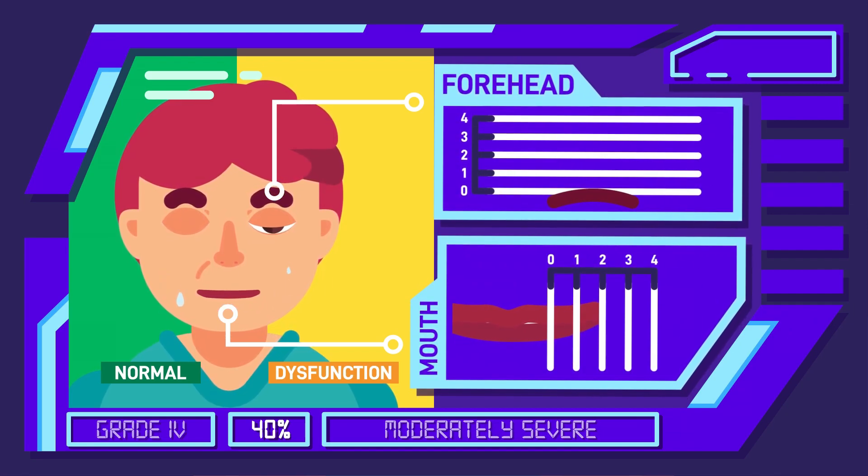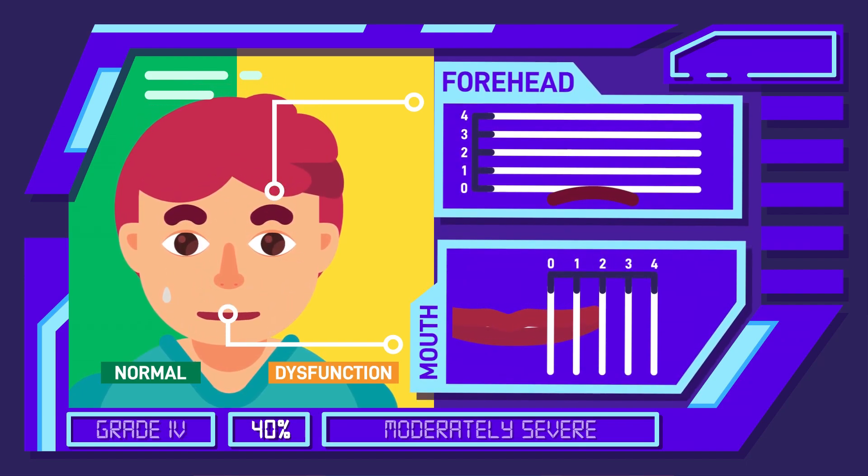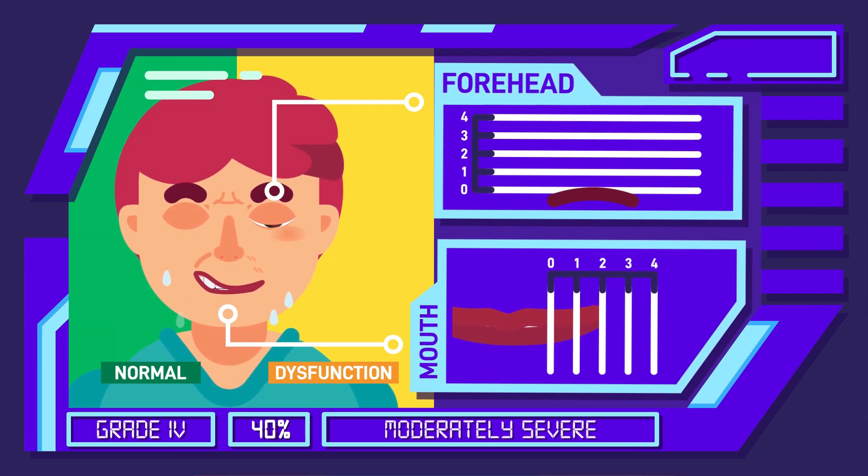Their eyes, even with maximum effort, are unable to shut completely. The synkinesis becomes more severe, creating a more obvious disfiguring asymmetry and weakness in the face.